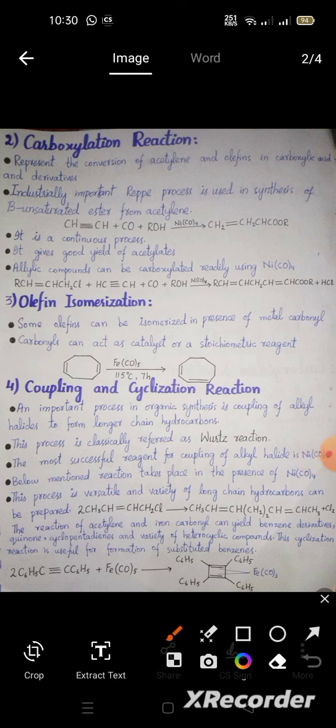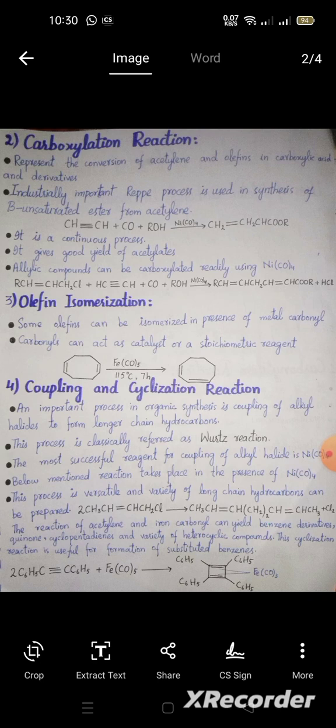For example, 2 CH₃CH=CHCH₂Cl reacts in the presence of nickel carbonyl to give CH₃CH=CHCH=CHCH₃ plus Cl₂. The reaction of acetylene and iron carbonyl can yield benzene derivatives, quinones, cyclopentadienes, and a variety of heterocyclic compounds. This cyclization reaction is useful for the formation of substituted benzene rings.